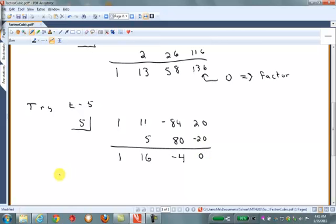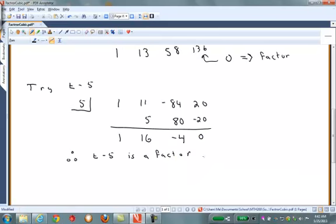So, t minus 5 is a factor. Remember, when this turns out to be 0, then that expression was a factor. So, we can write this t cubed plus 11t squared minus 84t plus 20 as t minus 5 times.